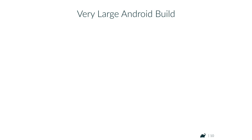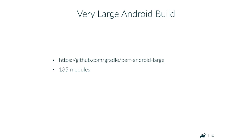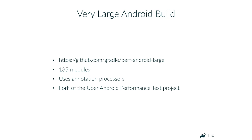One project we use for measuring performance is a very large Android test build. It's not a real project — you can get it from GitHub, and the README has instructions for benchmarking. It has 135 modules, uses annotation processors (which currently disables Gradle's incremental compile in those modules), and is optimized for a build system like Buck. The code is very evenly spread across small modules.